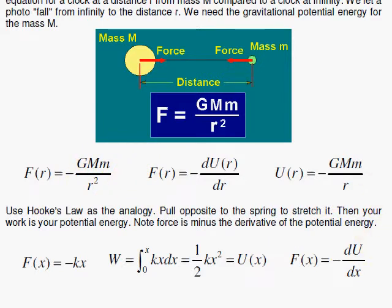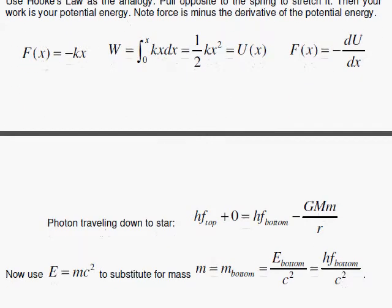So that's our potential energy. Now we're going to look at a photon that is traveling from very far away at infinity down to the star. So at infinity, we have no potential energy since r is infinity.